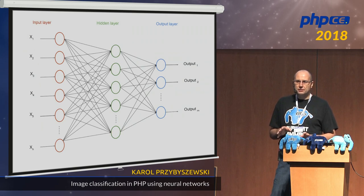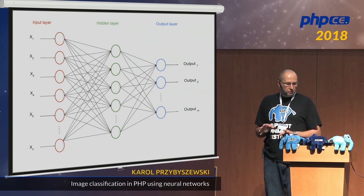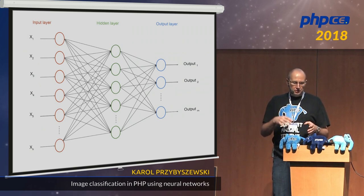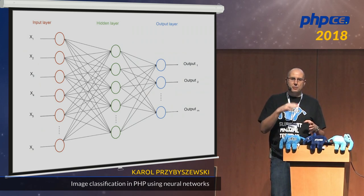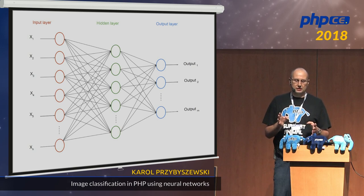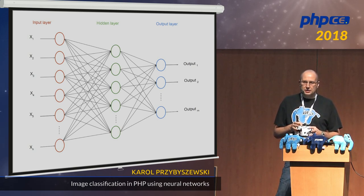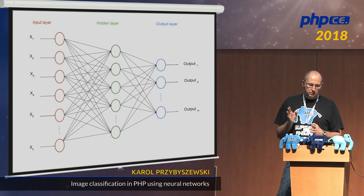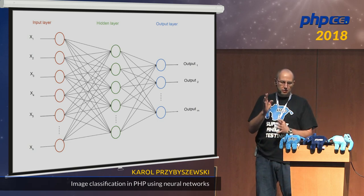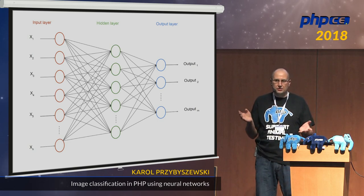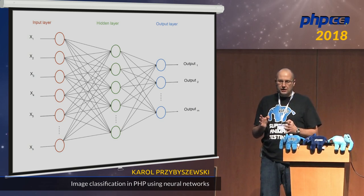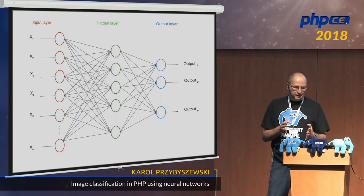This is an example of a very simple neural network. Neural networks have an input layer — you can have a number of inputs, usually marked by the letter X, so you can have N inputs. Then you have a hidden layer of neurons, which can have various numbers of neurons. And then you have the output, which can also have various numbers of outputs.